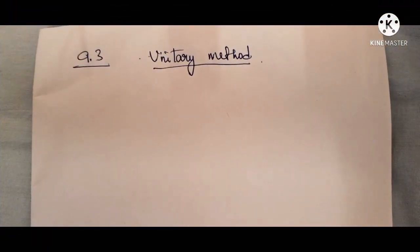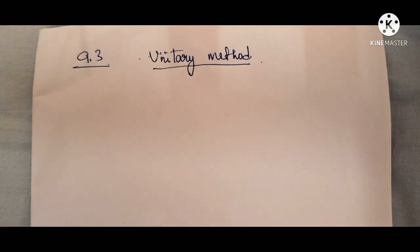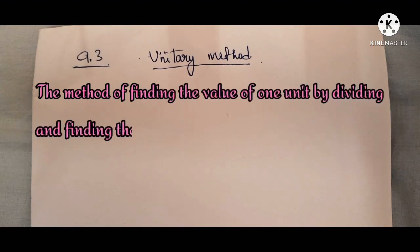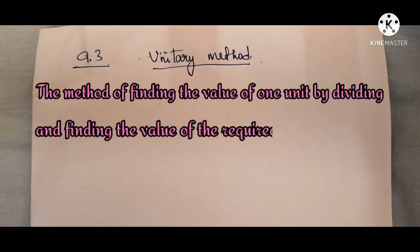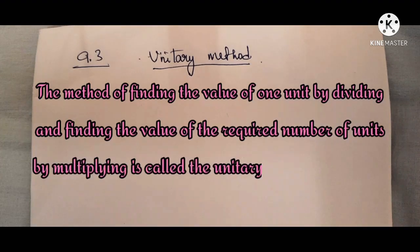Hello students, today we are going to do exercise 9.3, that is the unitary method. So before we start the exercise, let me tell you what is the unitary method. The method of finding the value of one unit by dividing and then finding the value of the required number of units by multiplying is called the unitary method.